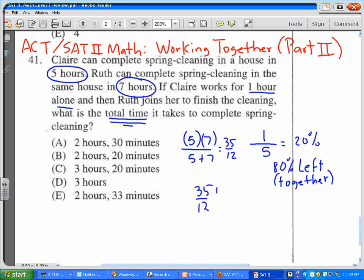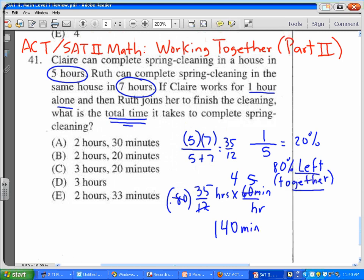hours working together to complete the job. But you only need 80% of that, because that's how much they need since they have 80% of the job left. If we change this into minutes, there's 60 minutes per hour. 12 into 60 is 5, and four-fifths of 5 is 4. 35 times 4 is 140 minutes. That's how long it...